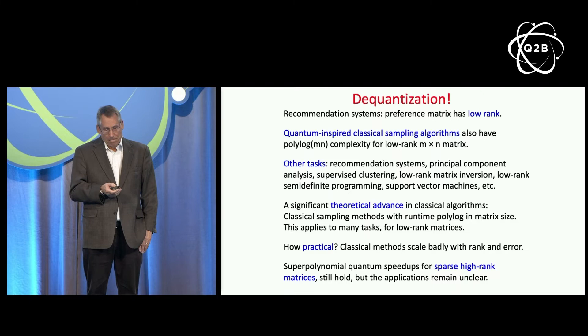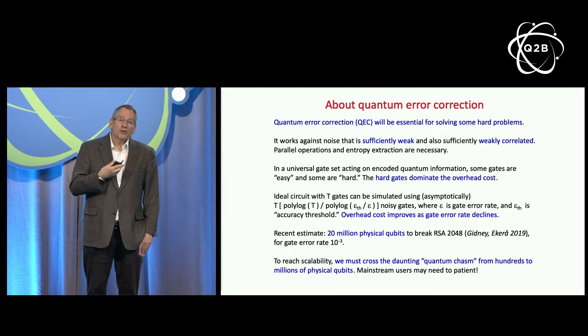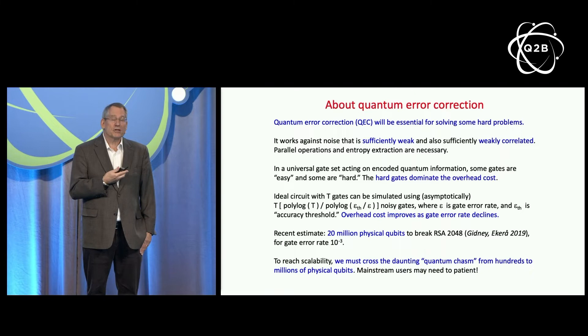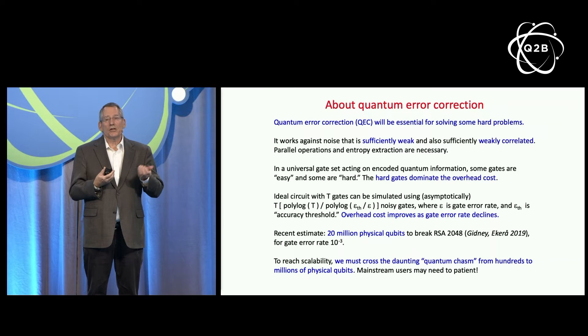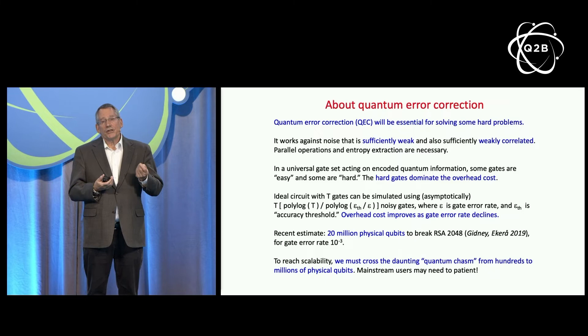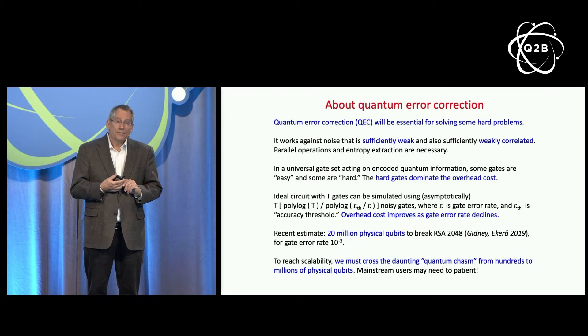We're not going to be able to do linear algebra — solving matrix inversion, for example — with quantum computers using NISQ devices. Those algorithms are just too demanding. For solving those and other hard problems, we're probably going to need scalable quantum computers using quantum error correction to achieve fault tolerance against the noise that afflicts quantum devices. In principle, quantum error correction can work as long as the noise is sufficiently weak, not too strongly correlated among qubits, and we can perform operations in parallel and frequently refresh the qubits. Theoretically, the overhead cost of doing quantum error correction does not scale too badly.